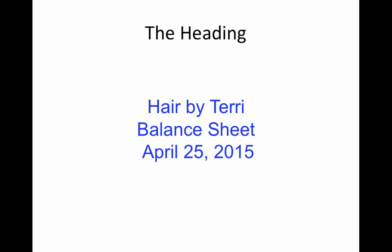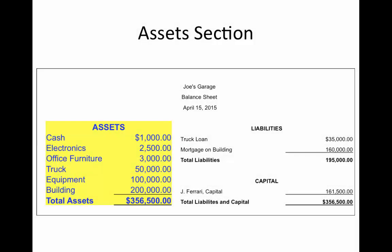Terry asked you to set up her heading for her balance sheet. This is what you should have gotten. First of all, we have the who — the name of her company is called Hair by Terry. We have the what — it's called the balance sheet. And the date that we did it would be April 25th. Now, of course, this date will change depending on the day that you've actually done this screencast. Now we move on to our next section — we already know the heading section, so now we're going to talk about the asset section.